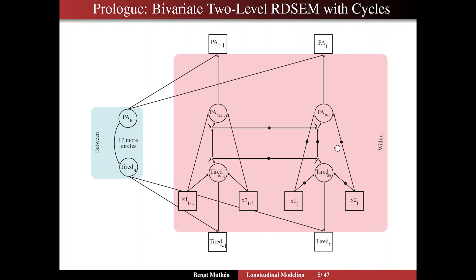This model is further complicated by having random effects — that is, regression coefficients that vary across individuals. We have seven such coefficients that become continuous latent variables, adding seven more circles on the between level in addition to the random intercept. This is a complex model where you should certainly not start the analysis here, but instead work through the details step by step: first doing univariate analysis of one variable at a time, and first doing analysis without random effects. We are going to go through a series of five steps outlined in the paper.